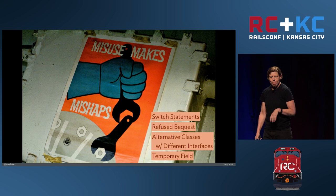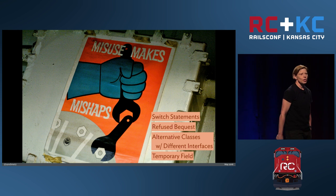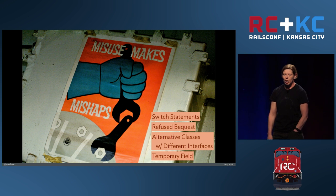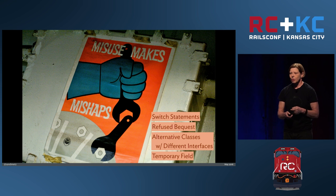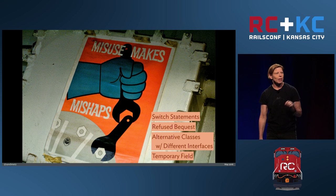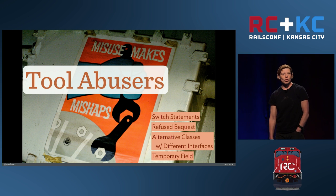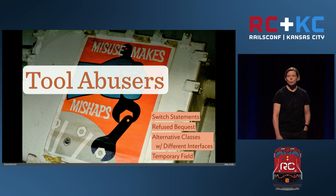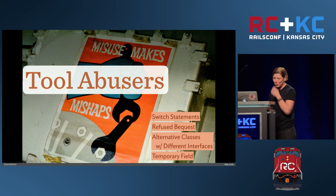The next group contains ideas available in object-oriented programming that you can misuse. Switch statements — that's conditionals in normal people talk. Refuse bequest is an inheritance problem: you have a subclass that overrides a method it inherits from a superclass and throws an exception saying 'I refuse the bequest.' Alternative classes with different interfaces is pretty obvious. Temporary field is interesting — sometimes they mean you should have made a method with that name instead. These things are grouped in a category called tool abusers. I have a garage full of bikes and am an amateur mechanic, which sometimes involves a very short wrench, a long pipe, and a hammer — and it almost always turns out badly if you abuse your tools.